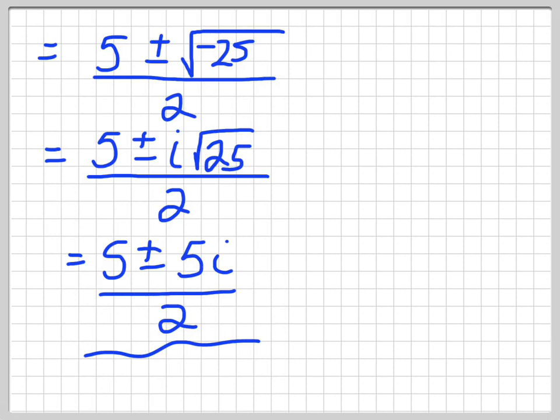So again, replace the negative with an i outside the root sign, then treat it as normal. But recognize what it means: it means no real solutions, no x-intercepts. Alright guys, so hopefully this video helped you with your quadratic formula, and I'll talk to you guys later.